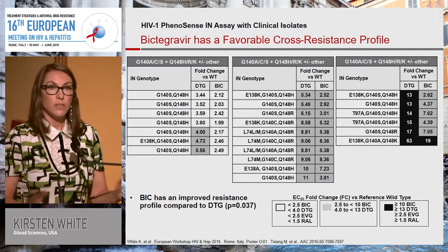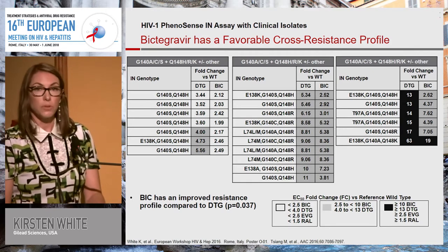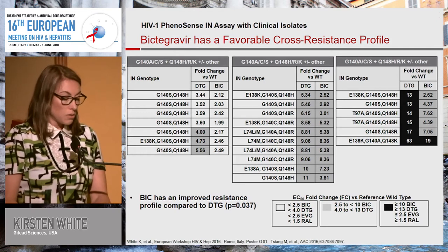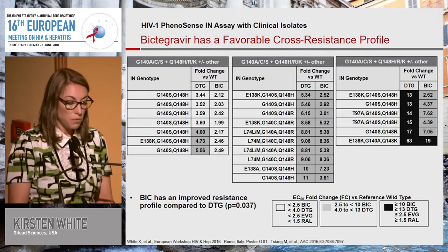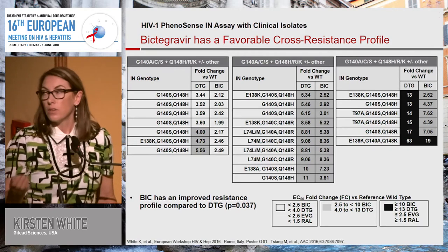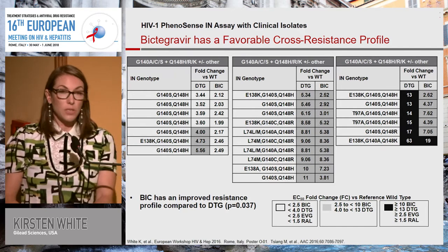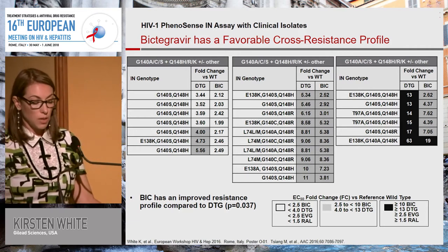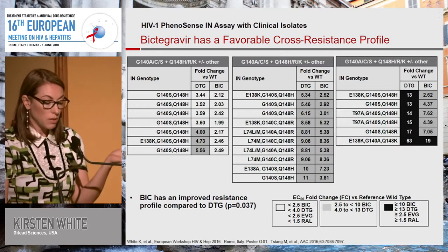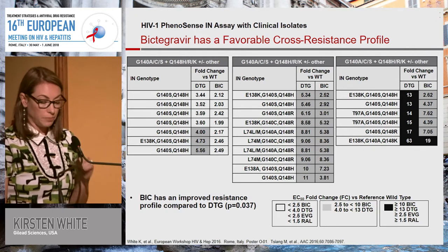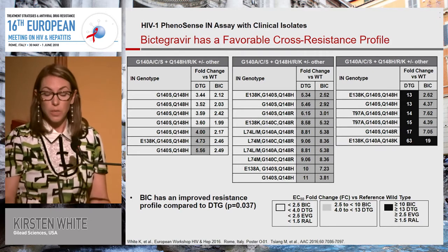Looking at clinical isolates, here I'm pulling in the 140 and 148 combinations. This is where we do have some reduced susceptibility to Bictegravir. For 140S/148H, many of these are sensitive to both DTG and BIC, but in the middle panel some show reduced susceptibility without additional mutations. When you have 140/148 plus other substitutions — 74M, E138A or K, and T97A — you can get further reduced susceptibility. We're interested in understanding more activity of BIC in patients with integrase resistance, but we're not quite there yet in the development program.